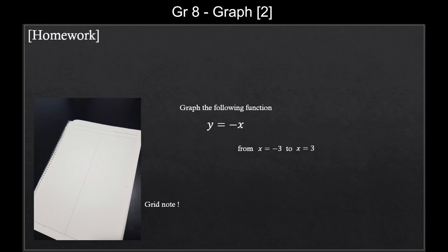And next time, you would want to have a special type of notebook ready. It's called a grid note, where the notebook doesn't have lines but rather has grids — you see how they have squares drawn in here? So it's easier for us to make a graph. It's not a requirement, but it will save a lot of time. So I recommend you buy a grid note. I hope you learned a lot from this video, and I'll see you later.